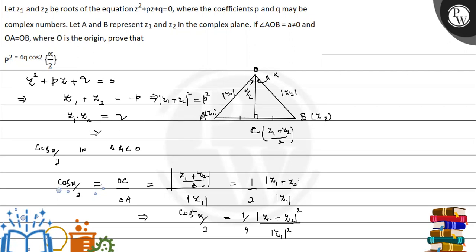And you can see if you apply modulus here, |z1·z2| equals q, which implies |z1|·|z2| equals q. Now |z1| and |z2| are the same, so we can write |z1|² equals q.